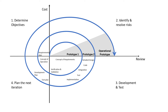The spiral model is like a series of waterfalls, and each iteration in this model is different from the previous one. As we build a system, we get a better understanding of the requirements and the end goal. At the end of each iteration, a prototype is built until we get a release candidate. Prototypes are evaluated by stakeholders, and each iteration builds upon the output of the previous iteration.